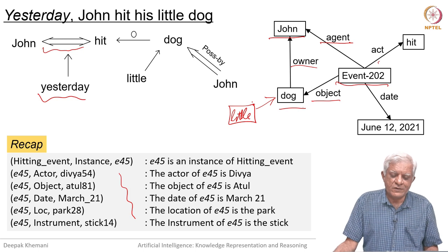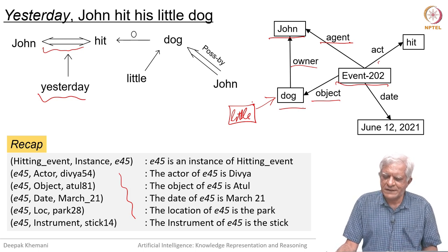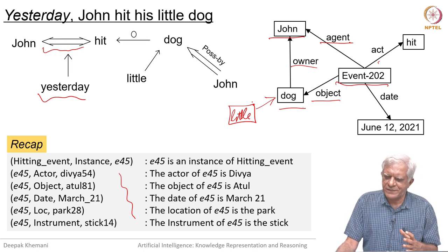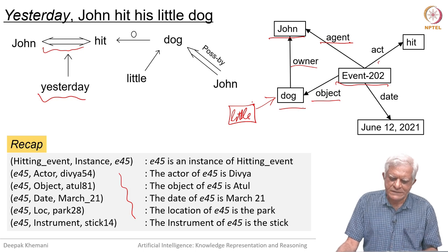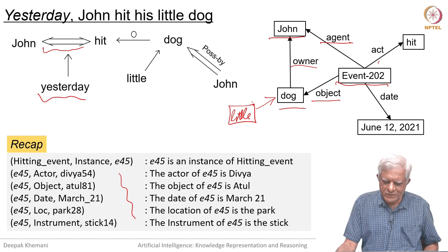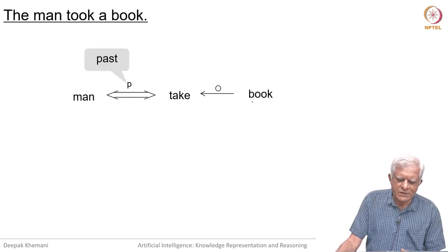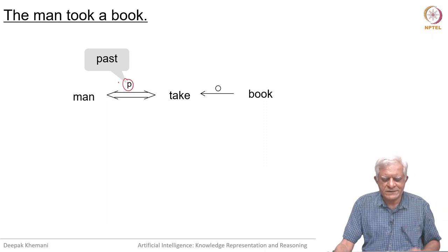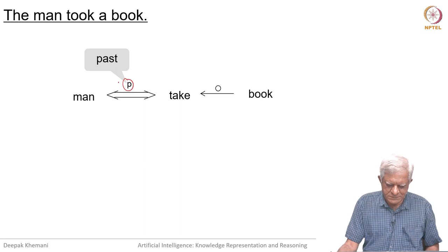Welcome back. We are looking at the way conceptual dependency represents facts, and we have seen that there is some similarity in the way we construct semantic nets of knowledge graphs and so on. But our focus on conceptual dependency was the choice of predicates, so let us start moving towards that. If we said that John took a book, then the man is the agent, the act is take, the object of the act is book, and this P stands for this happened in the past.